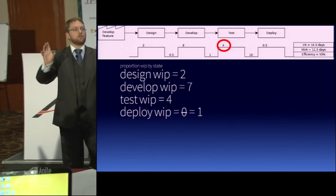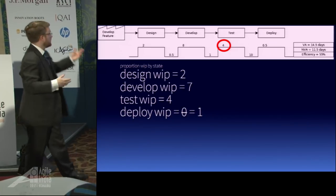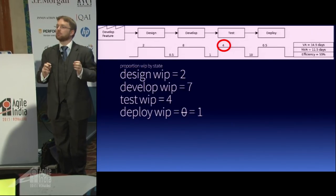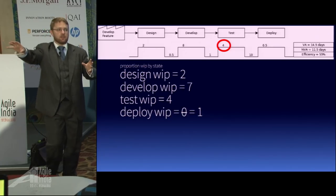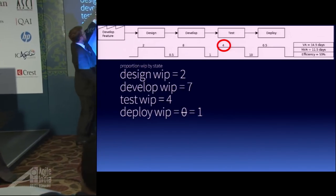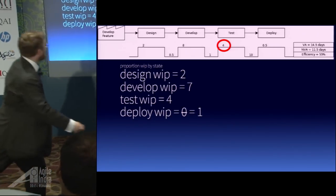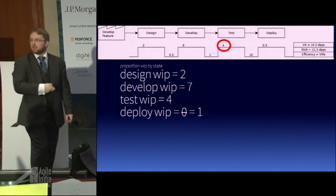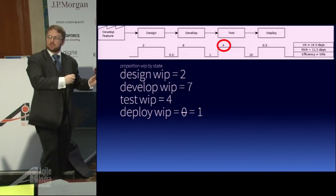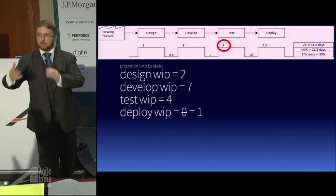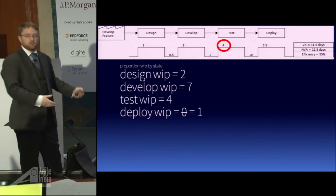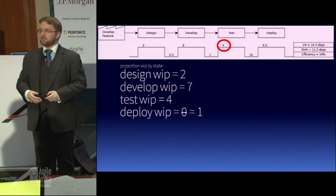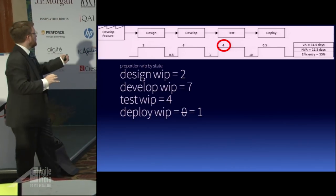Am I creating bottlenecks because my design WIP is two and develop is seven? Why is that not true? Because the pipeline of work is actually correct. Look at how proportionally much time we're spending on development versus design. Because we're spending four times as much time on development as on design, we can do four designs in the same time we can develop one feature. Because of that ratio, the ratio of resources is proportioned accordingly.